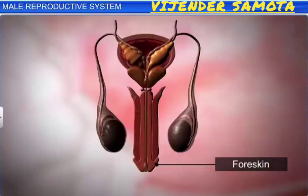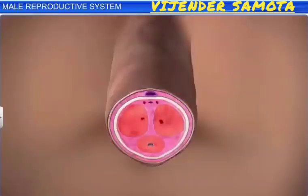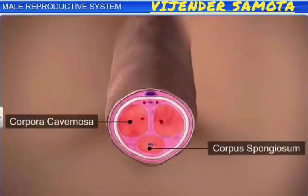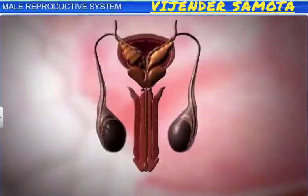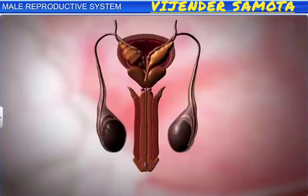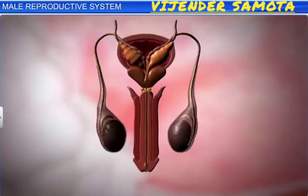The penis is made up of special tissues like corpora cavernosa and corpus spongiosum. The tip of the penis covered by the prepuce is called the glans penis. The penis, urethra, vas deferens, and Cowper's gland together help in copulation and in the deposition of sperm within the female.